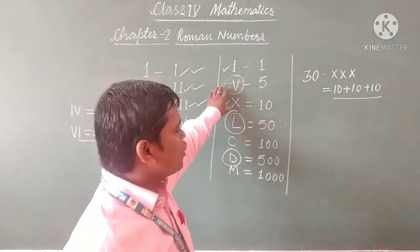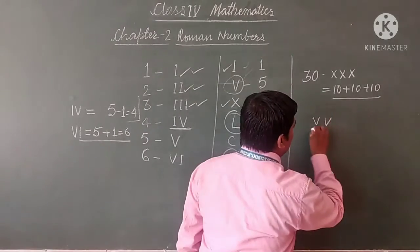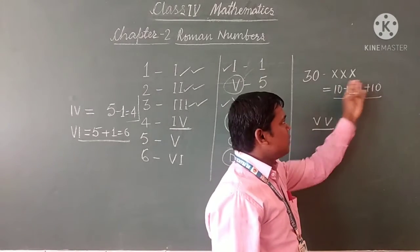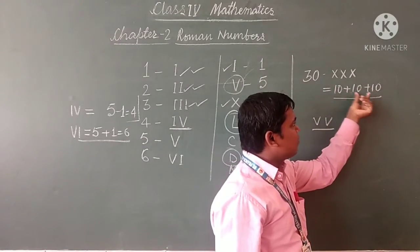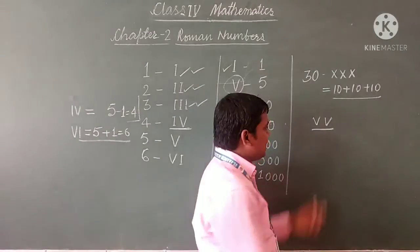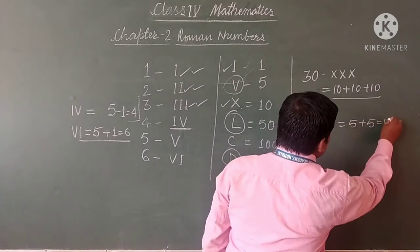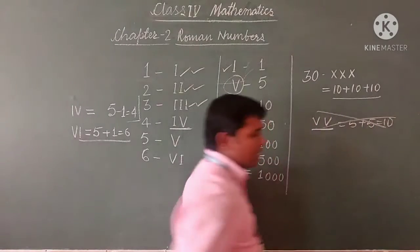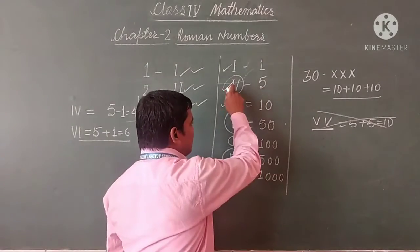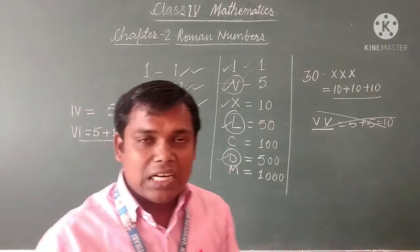These symbols we never repeat. If we have to write 10, we cannot write V and V, because V plus V equals 10 but that is not allowed. You have to remember the rule that symbol V, symbol L, and symbol D are never repeated.